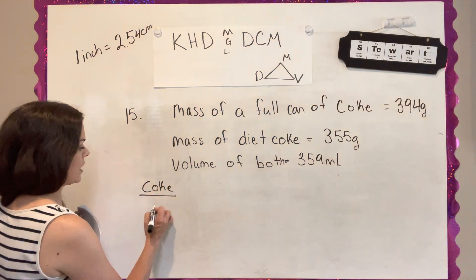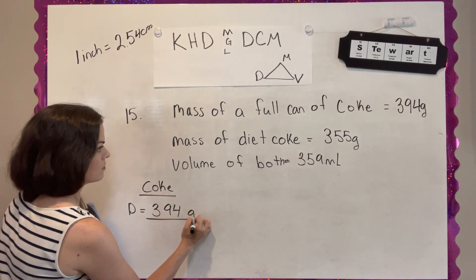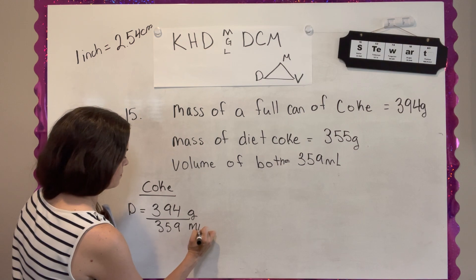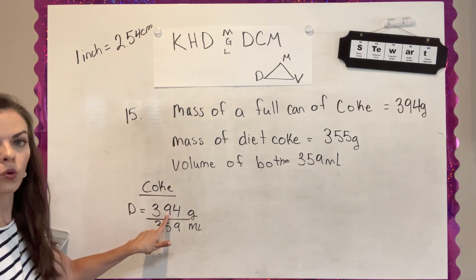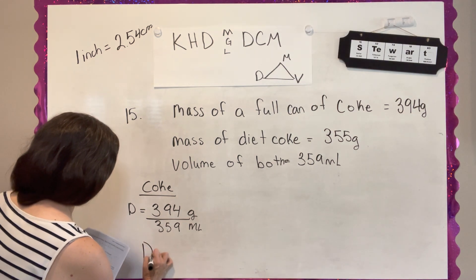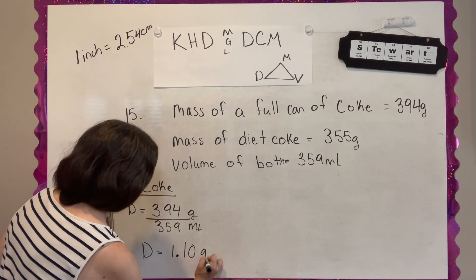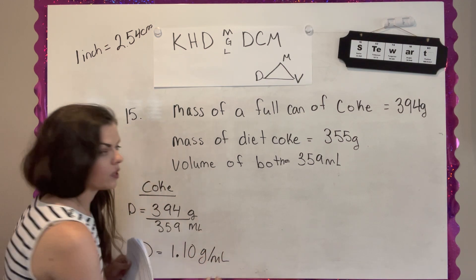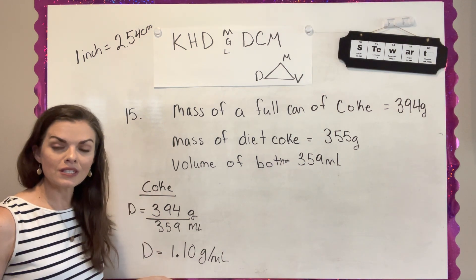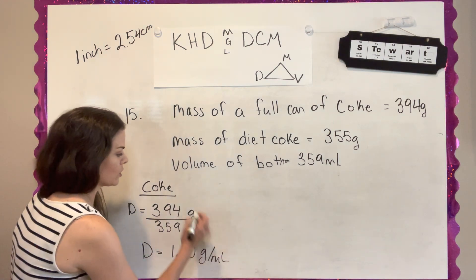So I have my mass and it's already in grams and the volume is the same for both. I want to report my answer to three significant figures. So the density of a can of Coke is 1.10 grams per milliliter, which if water is one, so this is more dense. So if I put this in water, this would actually sink.